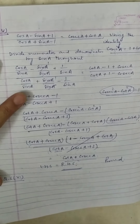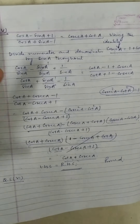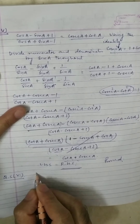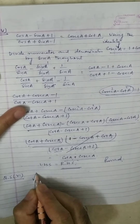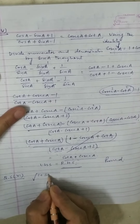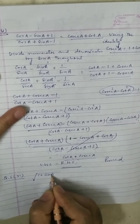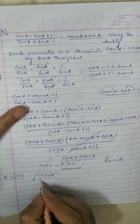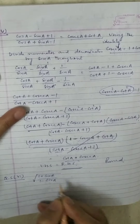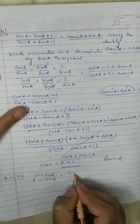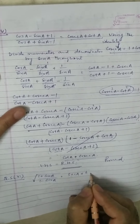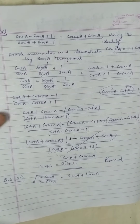Next question is question 5, part 6. The question is: under root of 1 plus sin a upon 1 minus sin a is equal to secant a plus tangent a.